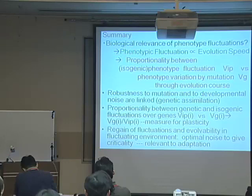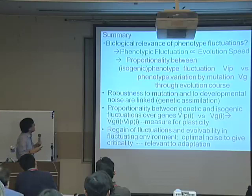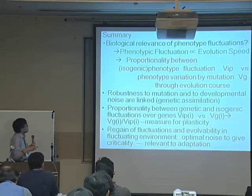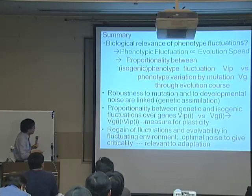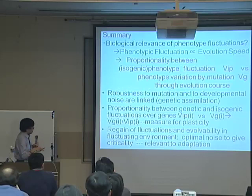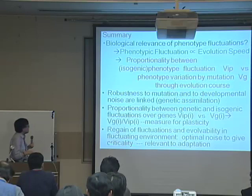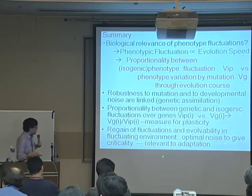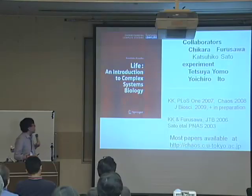To sum up: we discussed the biological relevance of phenotypic fluctuations — phenotypic fluctuation is proportional to evolution speed. We discussed proportionality between isogenic phenotypic fluctuation VIP and fluctuation by mutation VG: this proportionality holds through the evolutionary course and also over many genes. This is related to the relationship between robustness to mutation and robustness to developmental noise. Finally, regain of fluctuation and evolvability is found in fluctuating environments, and optimal noise level giving criticality is relevant to adaptation. Thank you very much.